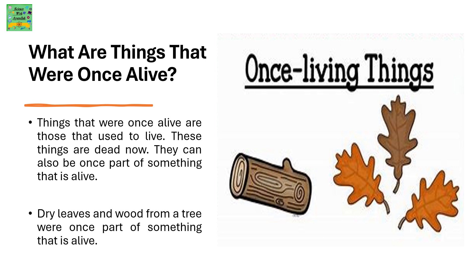What are things that were once alive? Things that were once alive are those that used to live — these things are dead now. They can also be a part of something that is alive. Dry leaves and wood from a tree were once part of something that is alive, that is a tree — the tree was alive before.